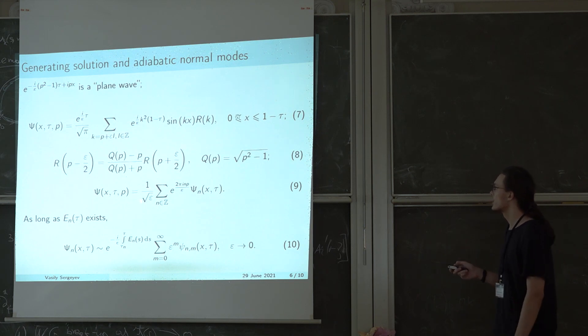The generating solution depends on the parameter p, and evidently, quite obviously, it is epsilon periodic in this parameter. And as such, we can expand this generating solution into a Fourier series. The Fourier coefficients also solve our problem, and they are precisely the solutions that we are interested in.